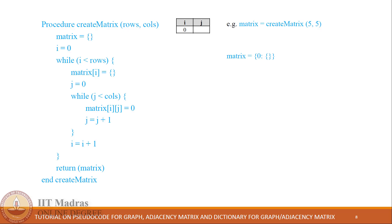matrix[i] refers to matrix[0]. This will create 0 as a key inside the matrix and will allot an empty dictionary as its value. After this, we are setting another variable j equal to 0, which will be used to count the number of columns using the nested while loop. In the inner while loop, we check whether j is less than the number of columns — again 0 is less than 5, so the condition is true. We are setting matrix[i][j] equal to 0, which will create one key j inside matrix[i].